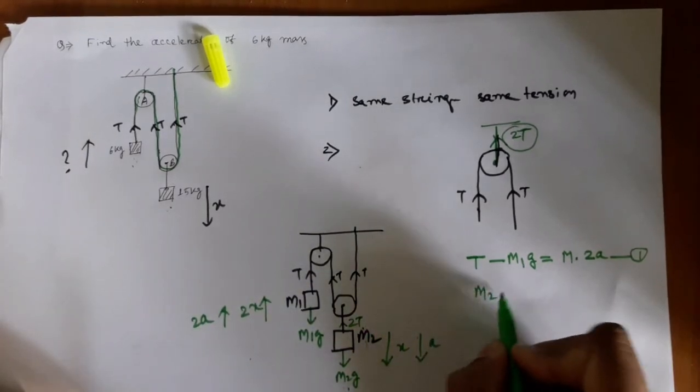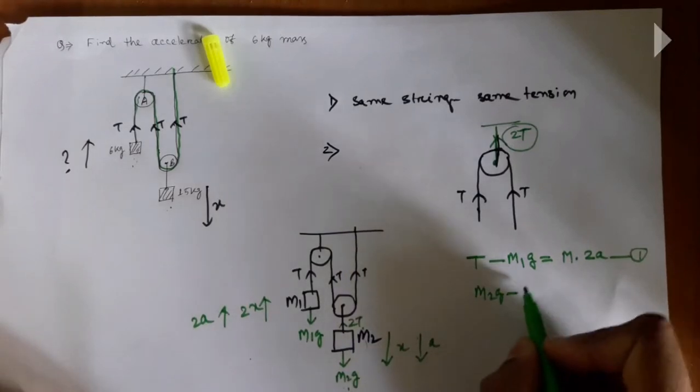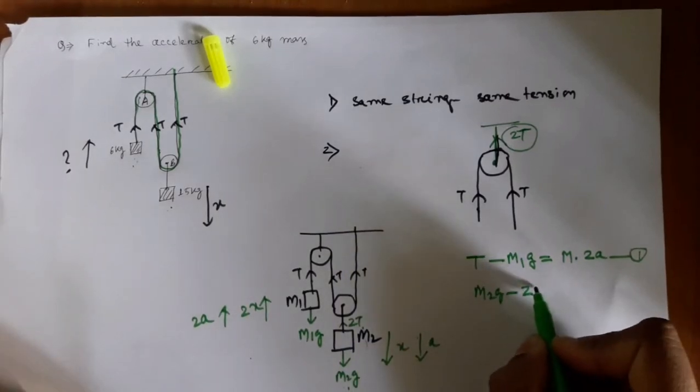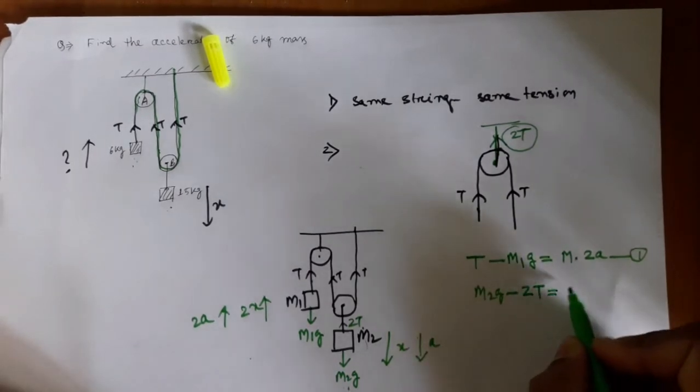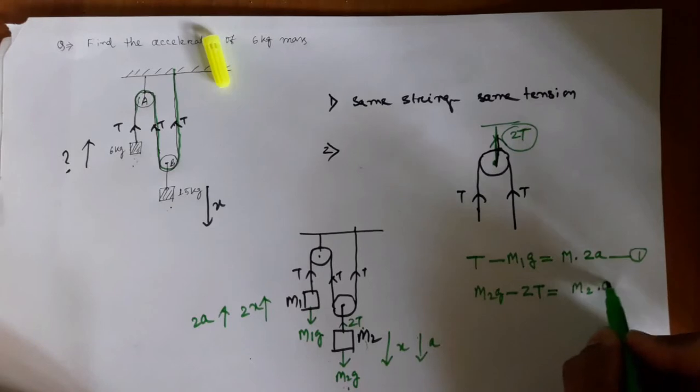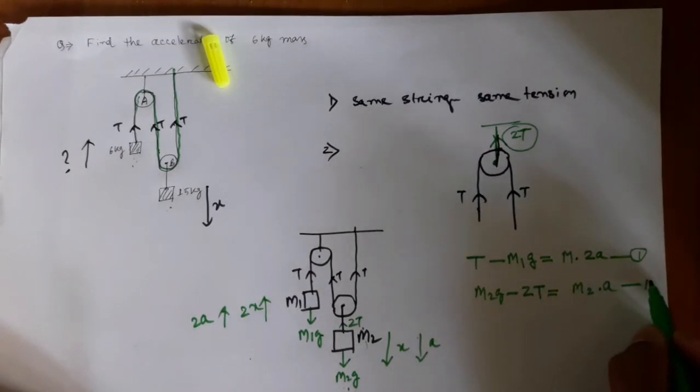Coming to the second equation: which is bigger, tension 2T or M2·g? Definitely M2·g is bigger. Only because of that, M2 mass is going downward because it is 15 kg. It must be going downward. So M2·g minus 2T equals M2 into a.